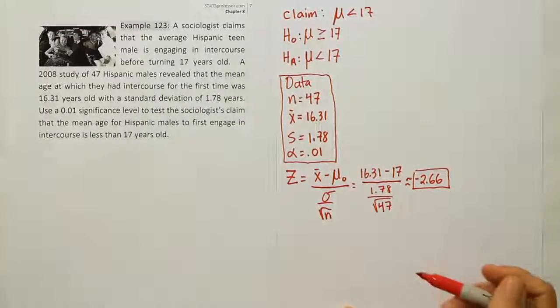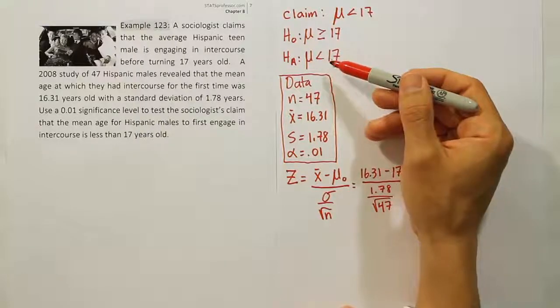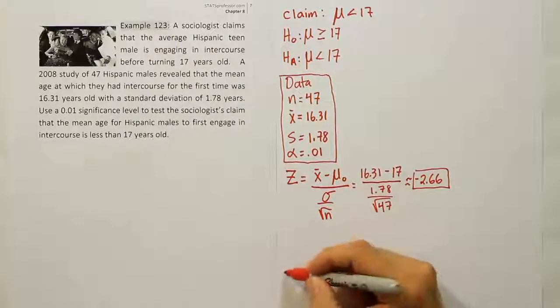Now that we have our test stat completed, our next step is to determine what kind of test we're conducting and find the critical value. When you look at the alternative hypothesis, that symbol will indicate what kind of test we're conducting. It's pointing to the left. This is therefore a left-tailed test.